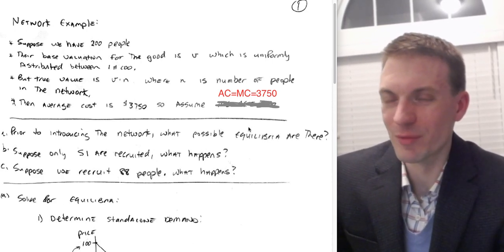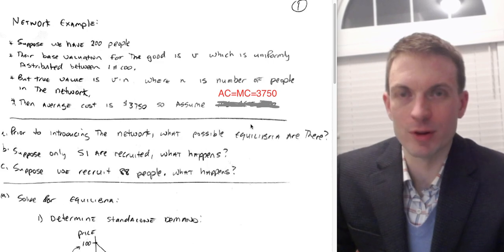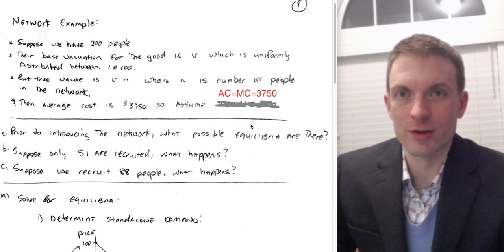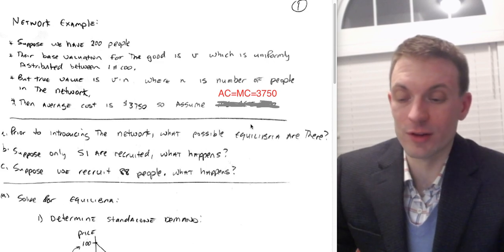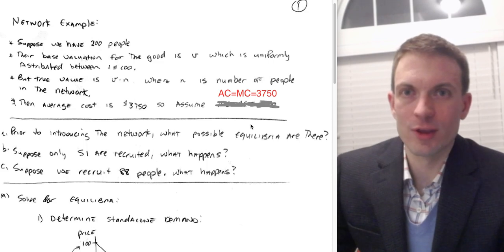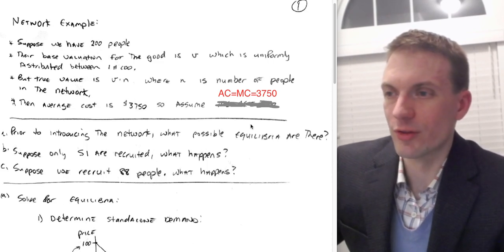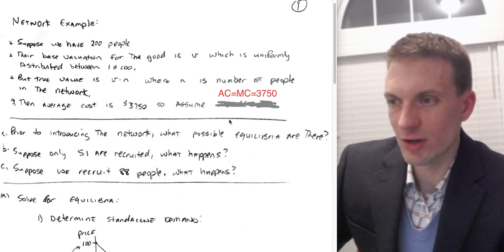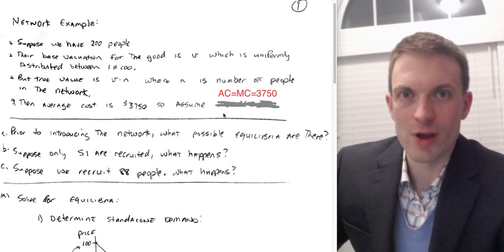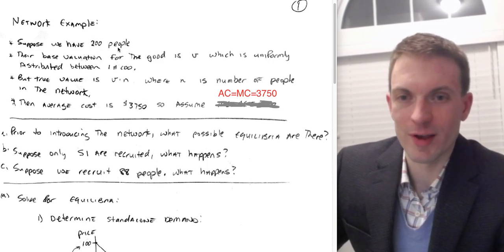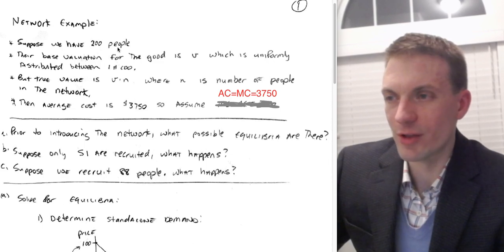Hello and welcome everyone. I'm going to show a network demand example — this is where you can build a network effect directly into a demand curve in a way that gives us a quadratic demand curve. There are a couple of different ways to model a network effect; sometimes we use the expected network size. This is going to be the quadratic demand version. Suppose we have 200 people — just a simplifying assumption to work with a reasonable network size.